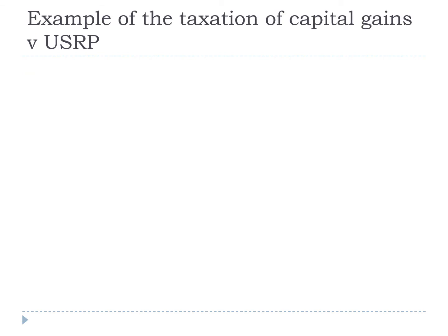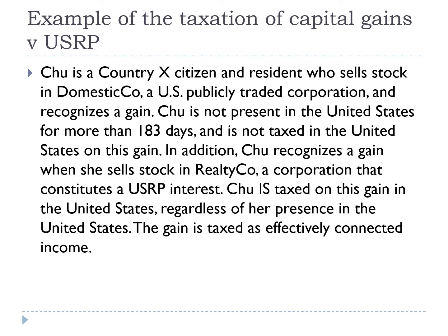Here's an example comparing the taxation of U.S. capital gains with the gains from the disposition of a U.S. real property interest. Chu is a Country X citizen and resident who sells stock in DomesticCo, a U.S. publicly traded corporation, and recognizes a gain. Chu is not present in the U.S. for more than 183 days and is not taxed in the U.S. on this gain. In addition, Chu recognizes a gain when she sells stock in RealtyCo, a corporation that constitutes a U.S. real property interest. Chu is taxed on this gain in the U.S. regardless of her presence in the U.S. The gain is taxed as effectively connected income.